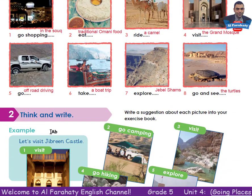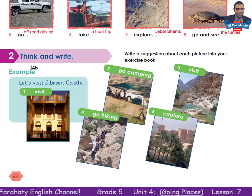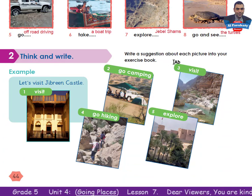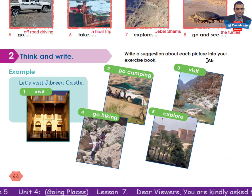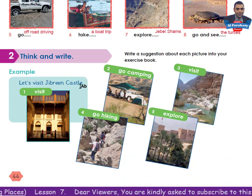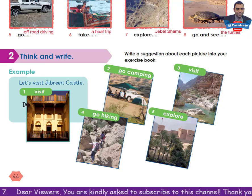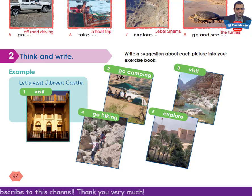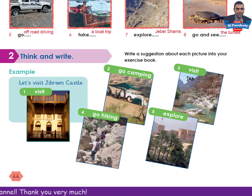Activity 2: think and write. Write a suggestion about each picture into your exercise book, like the example. Number 1: visit — let's visit Jabirin Castle. Number 2: go camping. Number 3: visit. Number 4: go hiking.